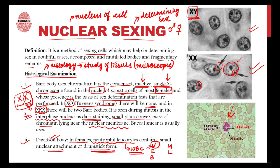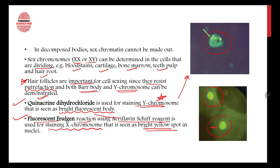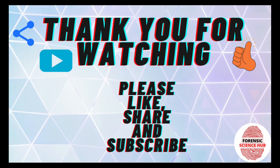To summarize: Bar body is the inactive X chromosome found in female somatic cells; Davidson body is the drumstick-shaped nuclear attachment in neutrophils found in females; the discoverers of Bar body are Murray Barr and Edward Bertram, who studied nerve cells in cats. The number of Bar bodies in a given genotype is always one less than the number of X chromosomes. Quinacrine dihydrochloride stains Y chromosomes (bright fluorescence in males), and fluorescent feulgen stains X chromosomes (bright yellow spots). In my next video, I'll discuss sex determination using the skull.